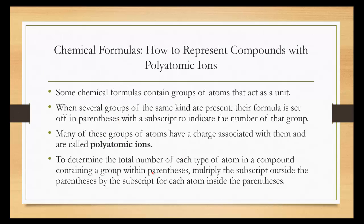Some chemical formulas contain a group of atoms that act as a unit. When several groups of the same kind are present, their formula is set off in parentheses with a subscript to indicate the number of that group. Many of these groups of atoms have a charge associated with them and are called polyatomic ions. Poly, meaning many, atomic, so many atoms, ions. Ions have a charge, so many atoms share a charge.